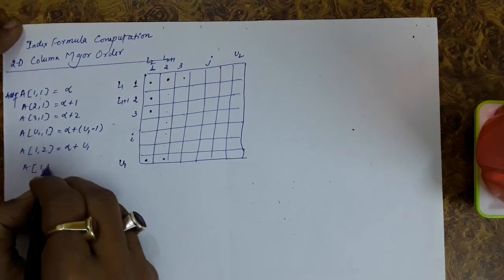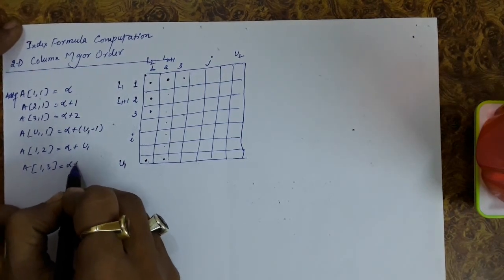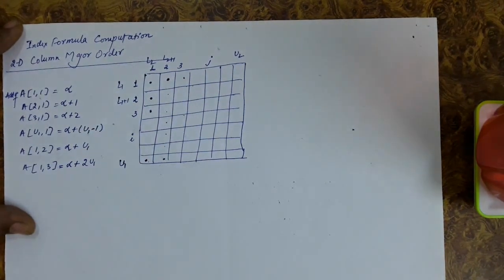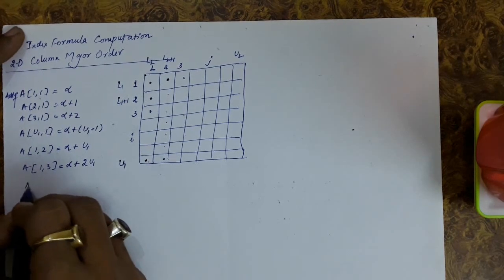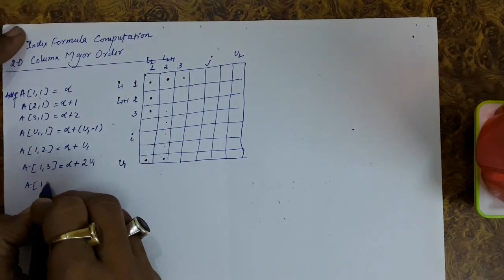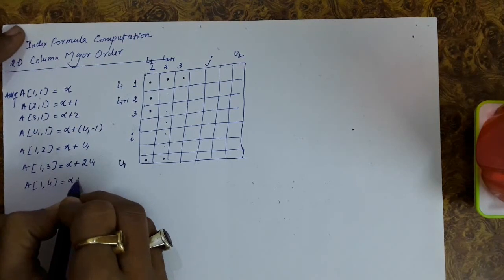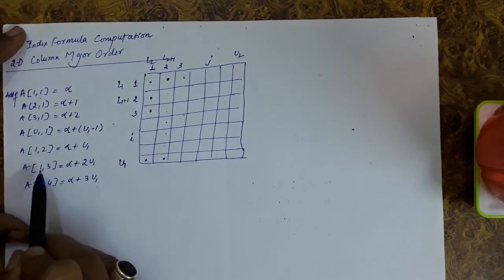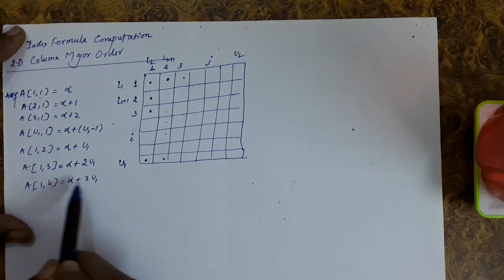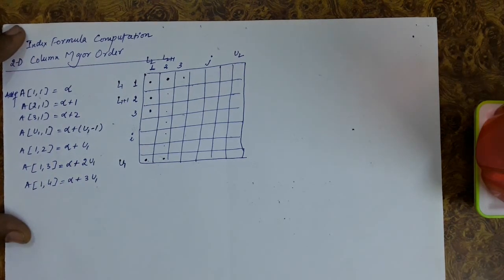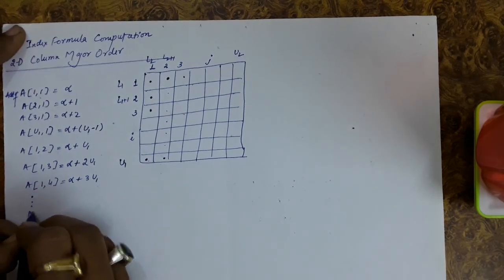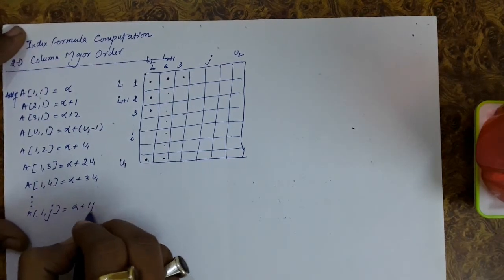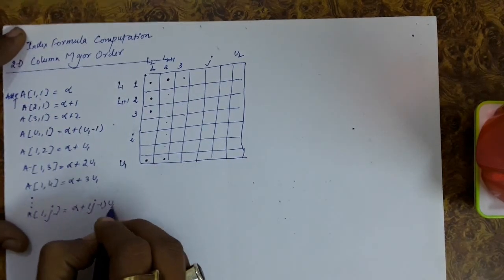The address of a13 is alpha + u1 + u1 = alpha + 2*u1. The address of a14 is alpha + 3*u1. So if the column index is 2, the multiplier is 1; if it is 3, the multiplier is 2; and if it is 4, the multiplier is 3. In general, the address of the first element of the jth column is alpha + (j-1)*u1.